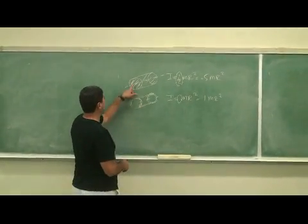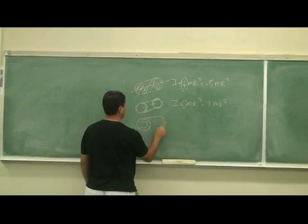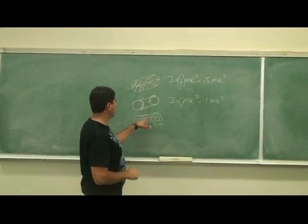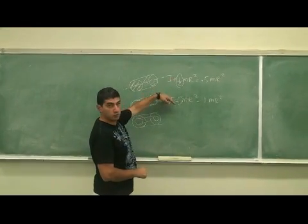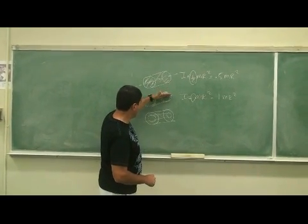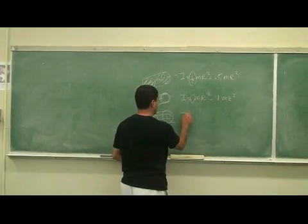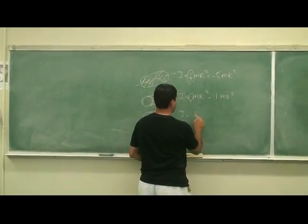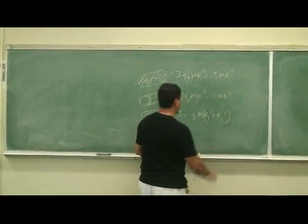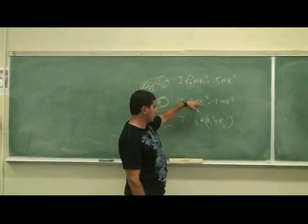How about if it was a cylinder halfway between, kind of like this? Well, then we would expect the moment of inertia of this to be between the two. Not as hard to rotate as the hollow one, but easier to rotate than the solid. It turns out that the equation of this is half m r1 squared plus r2 squared, and it comes between the two.